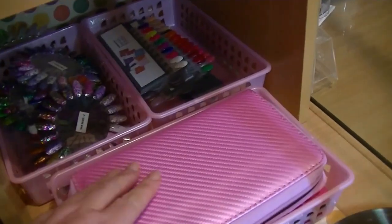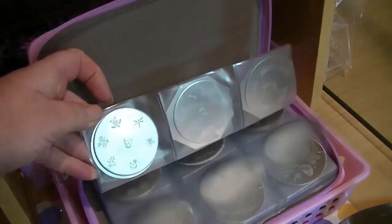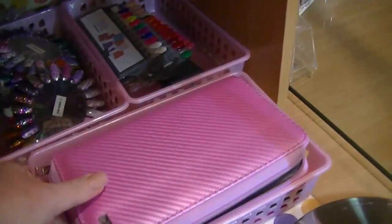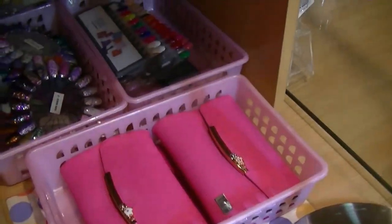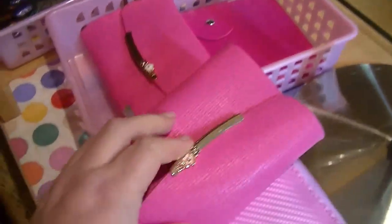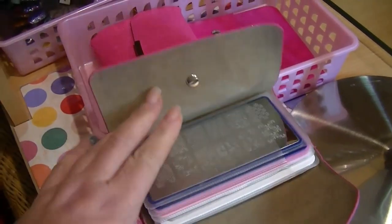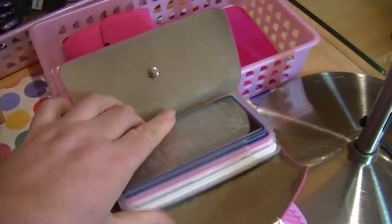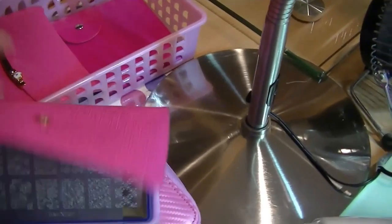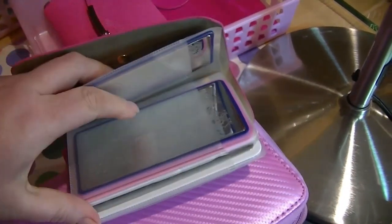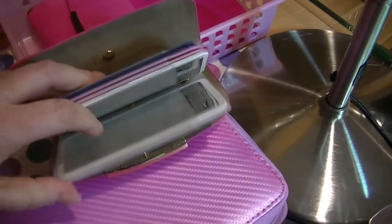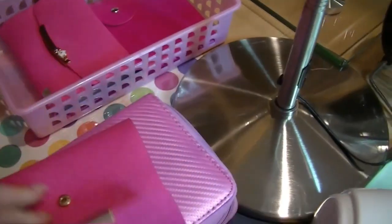These are my stamping plates. I keep these in albums. The first album consists of all my round plates, and these two smaller ones have my rectangular plates. I predominantly use Bundle Monster and Born Pretty plates, and I also have some MoYou UK plates. These are great to display the plates in, as the plastic envelopes are transparent so it's quite easy for clients to choose what design they would like.